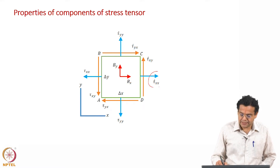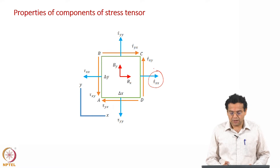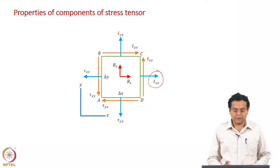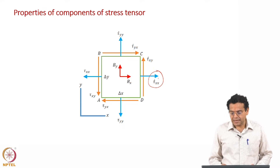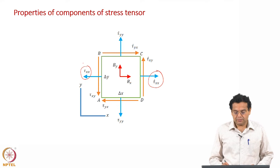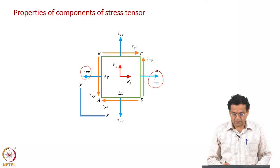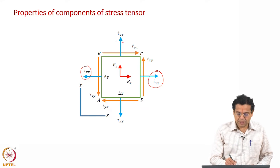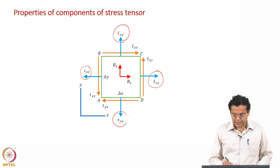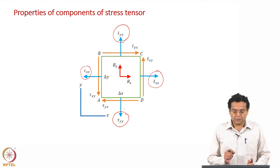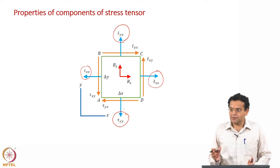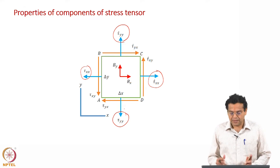We have tau dash xx on the right face. Remember, all forces are shown in the positive sense — on a positive face, force is along the positive direction; on a negative face, force is along the negative direction. So the right-side face has tau dash xx along the positive x-axis, and the left-side face has tau xx along the negative x-axis. In the y direction, tau dash yy is on the positive y face and tau yy on the negative y face. We have taken different values on each side to begin with.